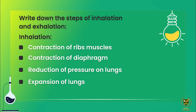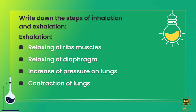Next short question: write down the steps of inhalation and exhalation. Inhalation is the process of taking oxygen inside the lungs. First step is contraction of the rib muscles (intercostal muscles), then contraction of diaphragm at the same time, and then reduction of pressure, which allows air to move into the lungs. For exhalation — opposite happens: relaxation of rib muscles and intercostal muscles, relaxation of diaphragm, increase in pressure on the lungs, contraction of lungs, and air moves outside the lungs.